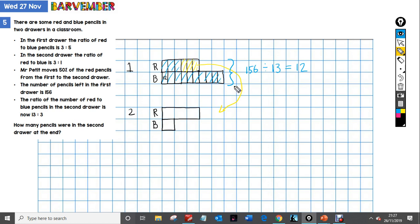So what does that tell us? Well, we then know that this bit here is 36. So we know that 36 red pencils were moved to the second drawer. Well, where are we now? We can't just add them on here because these portions are not necessarily the same size as these ones. So let's look at what else is going on in the information.